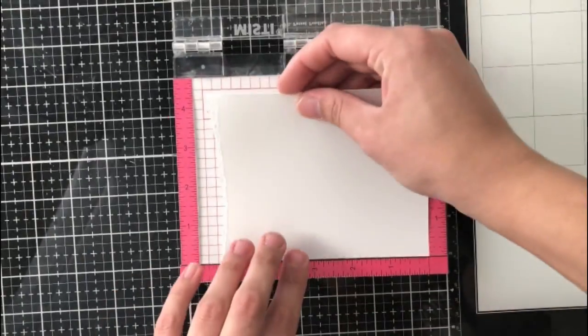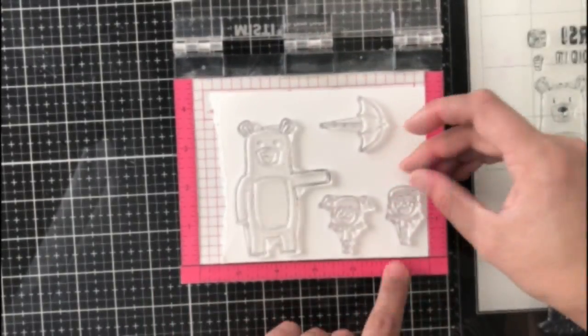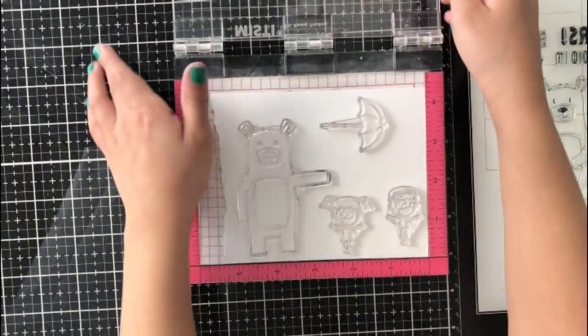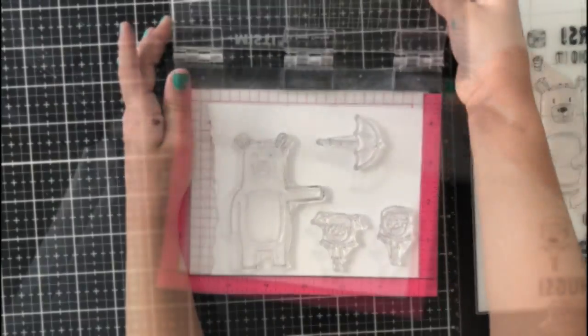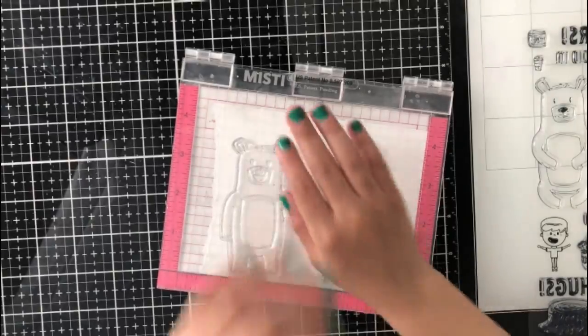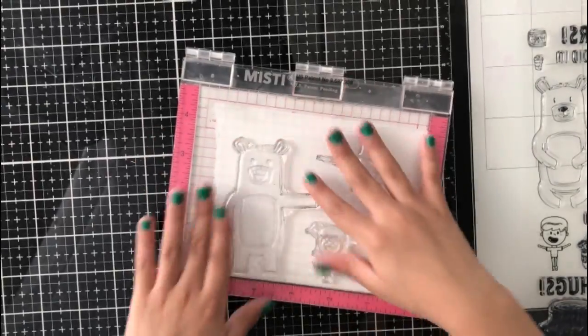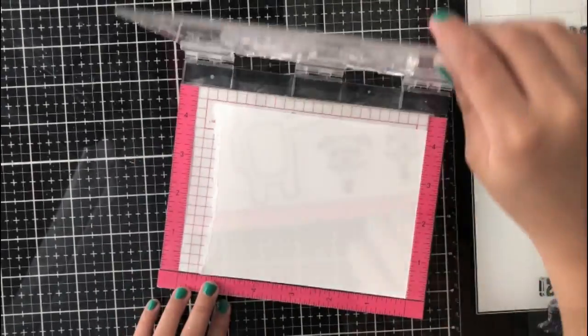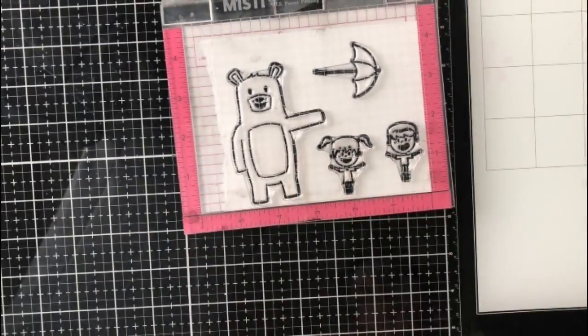Now it's time to stamp. I'm going to use a mini Missy, and the bear, the umbrella, and the boy and girl, and the bird design on black ink.